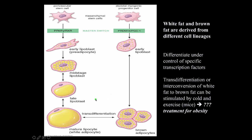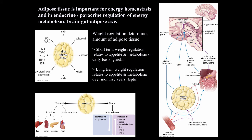Something relatively new is the concept of trans-differentiation or inter-conversion of white fat to brown fat. Experimental animals exposed to cold or vigorous exercise show some inter-conversion of white fat to brown fat. This is intriguing because if one could harness this inter-conversion, it might provide a potential treatment for obesity, since brown fat cells generate heat and essentially burn calories. Adipose tissue, while not emphasized in histology, is very important for energy homeostasis and endocrine paracrine regulation of energy metabolism.